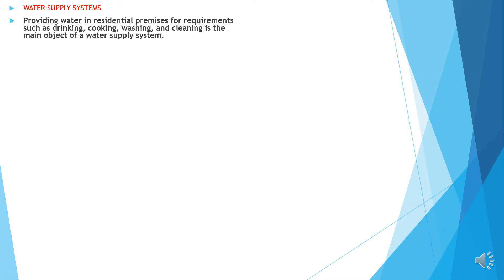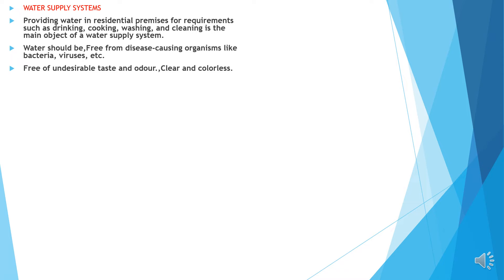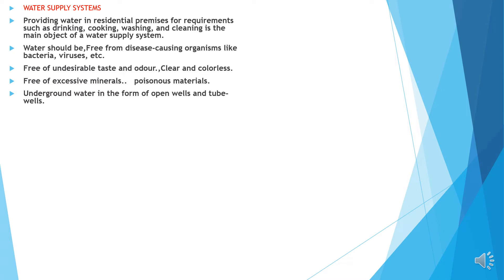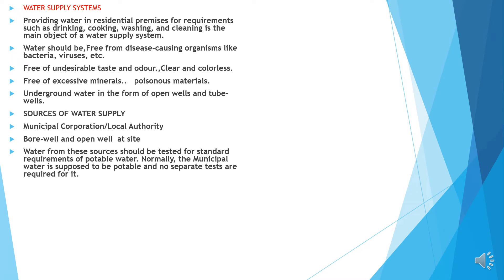Water supply systems. Providing water in residential premises for requirements such as drinking, cooking, washing and cleaning is the main object of the water supply system. Water should be free from disease-causing organisms like bacteria and viruses, free of undesirable taste and odour, clear and colourless, free of excessive minerals and poisonous material. Sources of water supply: municipal corporation or local authority, bore well and open well at site. Water from these sources should be tested for standard requirements of potable water. Normally municipal water is supposed to be potable. The standard requirement of potable water is attached as a test report.